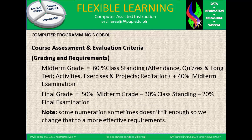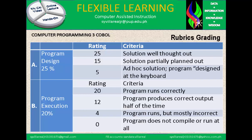Course assessment and evaluation criteria — grading and requirements. Midterm grades: 60% class standing, which includes attendance, quizzes, long tests, activities, exercises, project, and recitation. The remaining 40% is the midterm examination — 60 plus 40 equals 100%. The final grade is 50% midterm grade, plus 30% class standing, plus 20% final examination. Note: some numeration sometimes doesn't fit, so we change that to more effective requirements, especially in an online class.